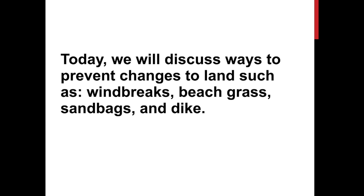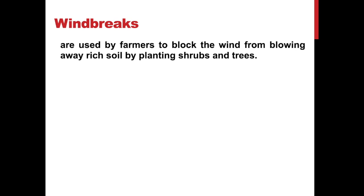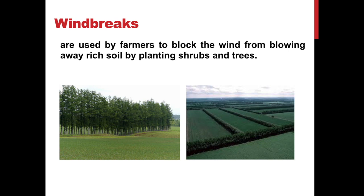So first, windbreak. A windbreak is also called a shelter belt. These are used by farmers to block the wind from blowing away rich soil by planting shrubs and trees. As you can see in the pictures, trees and shrubs are being planted at the side of the field, so the wind will change its direction so that the rich soil will not be blown away.